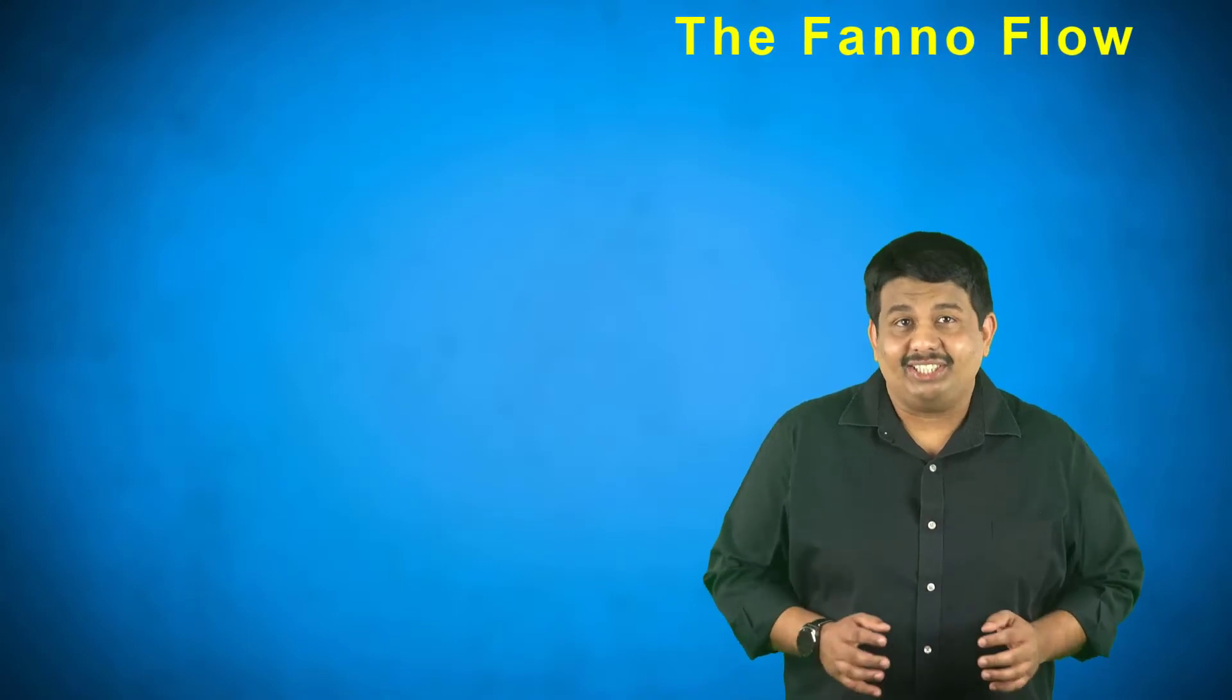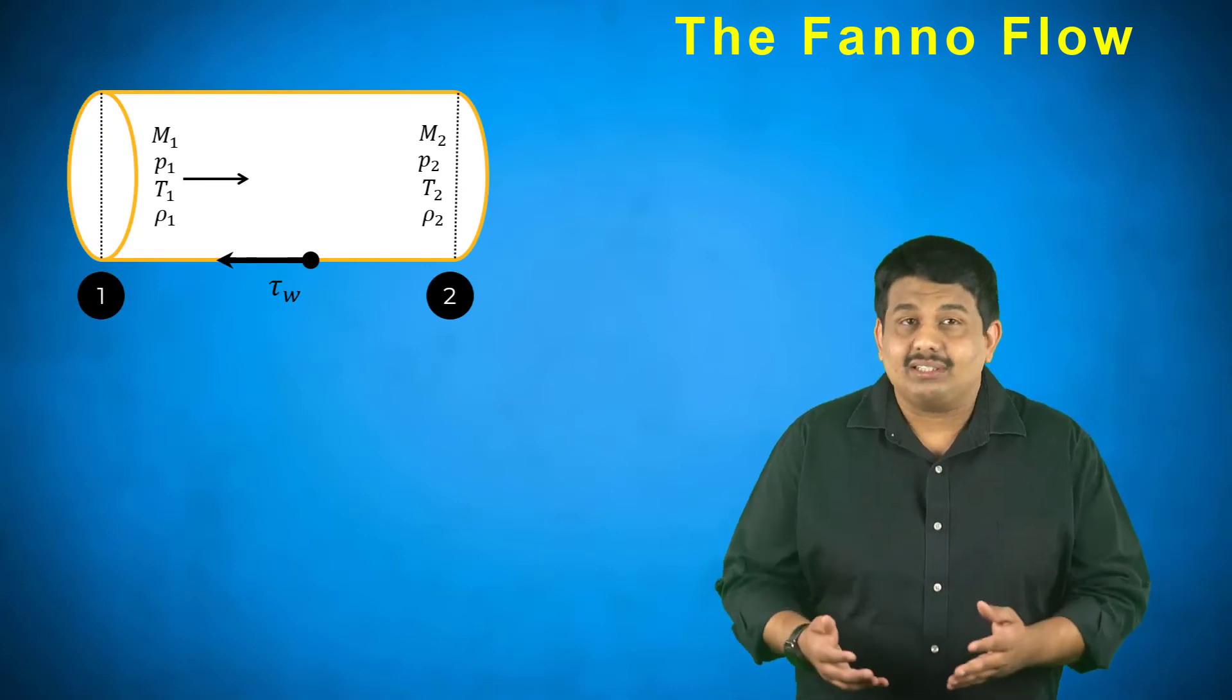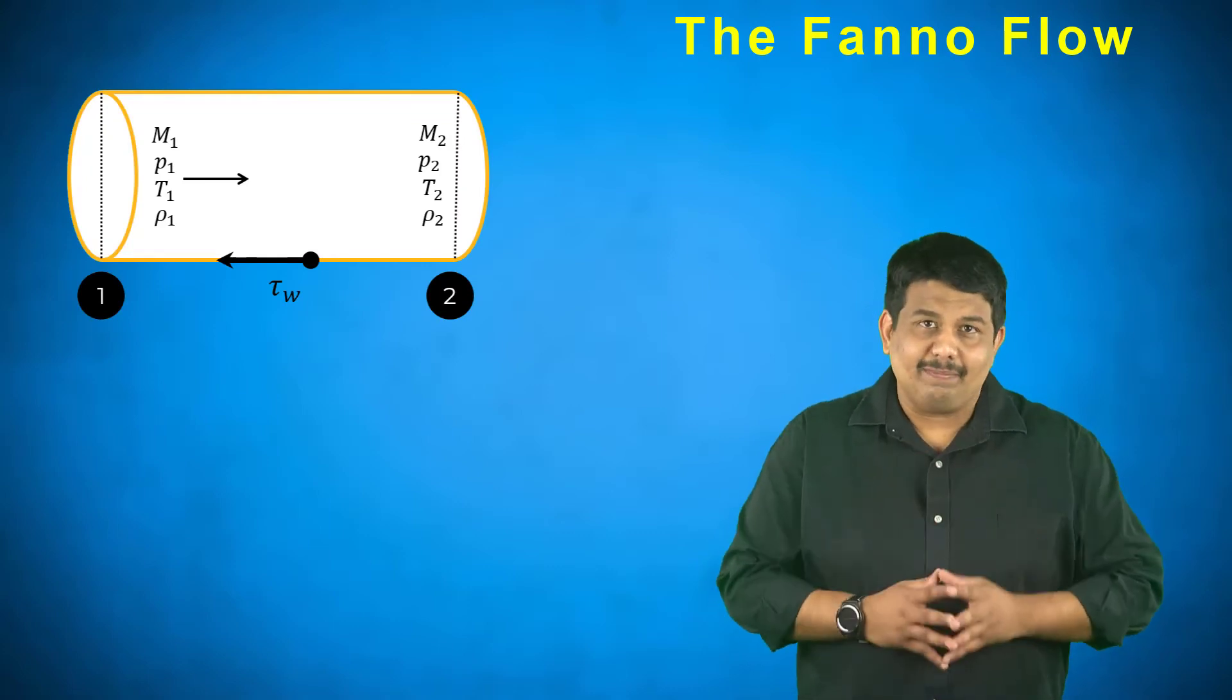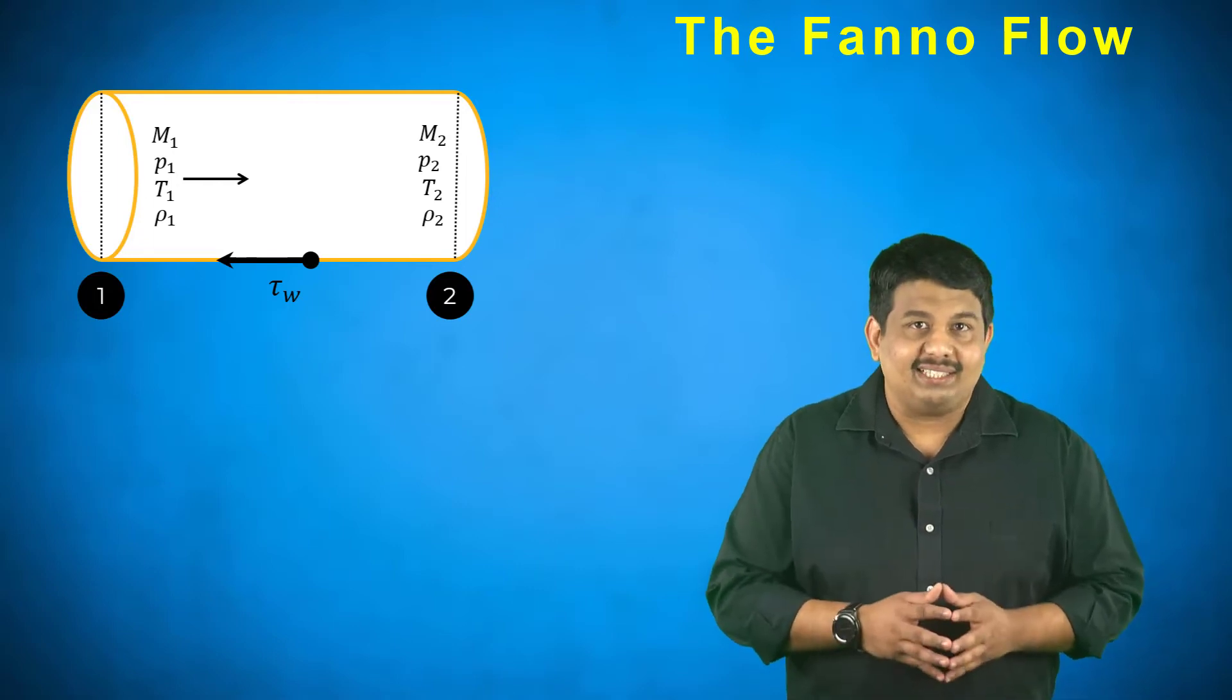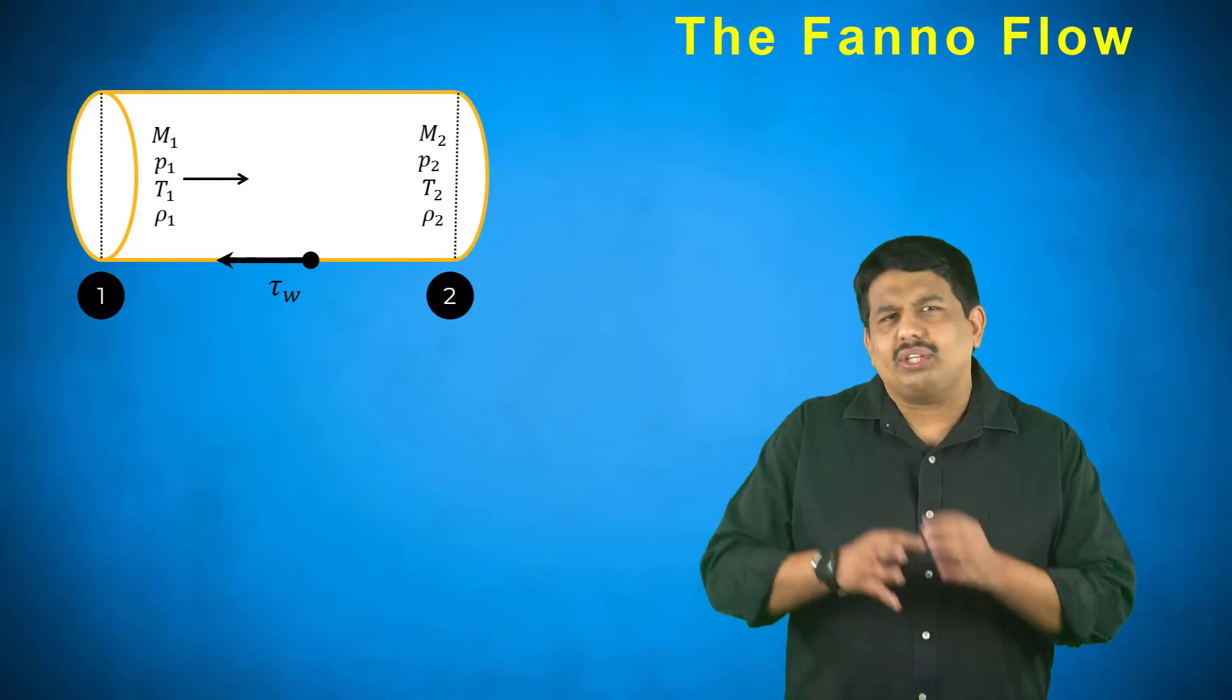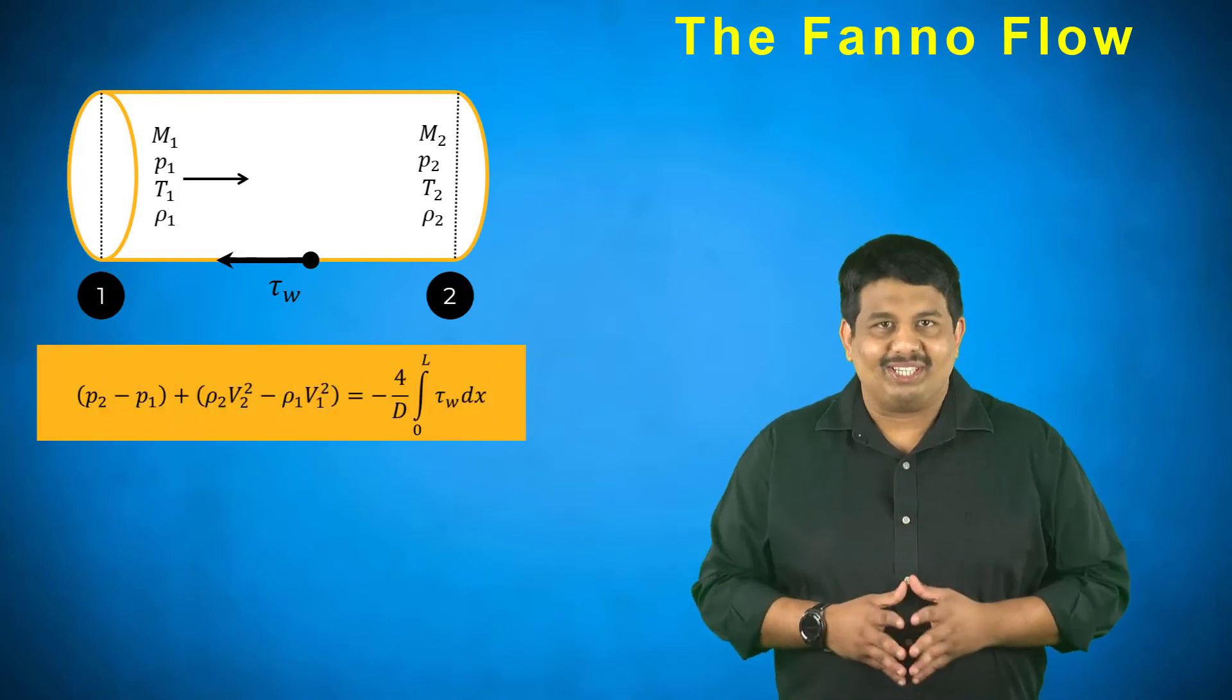Let us now turn our attention to the second part of the lesson, the Fanno flow. We will now add the viscous terms to our 1D momentum equation. Including this term in the analysis as well as accounting for the constant cross-sectional area of the pipe, we obtain the following equation.